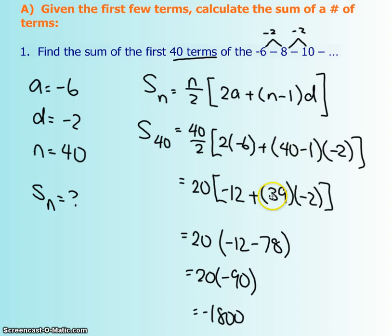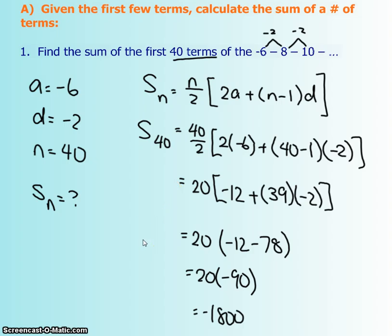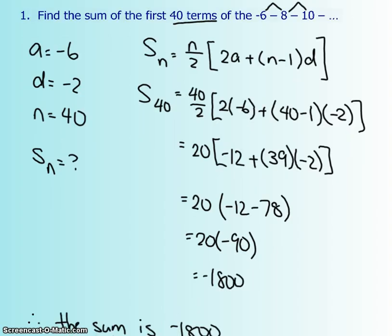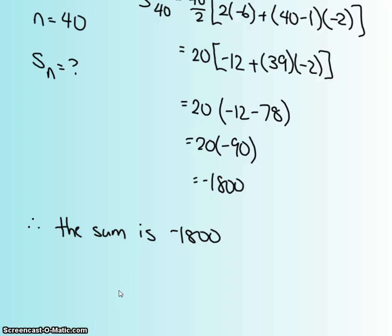We're going to do BEDMAS to figure out the answer. Do your brackets first — you could even multiply these terms if you want to, as long as you add this answer afterwards. Then we're going to find the answer to this and multiply it with the 20 from the 40 over 2. That means that if I add up all these negative numbers, I'm going to get a really big negative number after 40 terms. At the very end, you want to give a therefore statement that answers the original question.